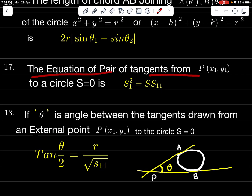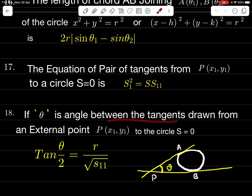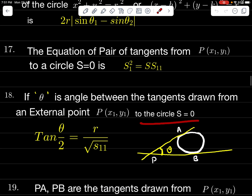The equation of the pair of tangents from P(x₁, y₁) to circle S = 0 is S₁² = S·S₁₁. If θ is the angle between the tangents drawn from external point P(x₁, y₁) to circle S = 0, then tan(θ/2) = R / √S₁₁, where R is the radius.